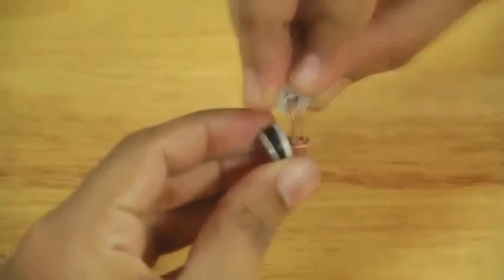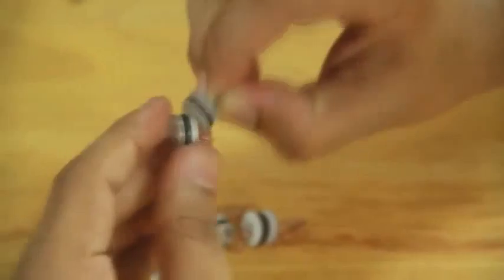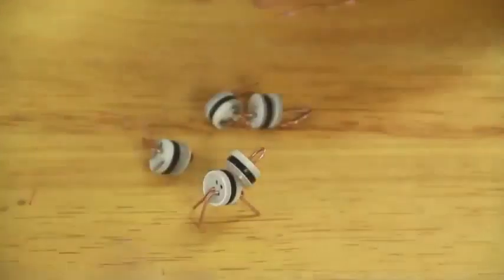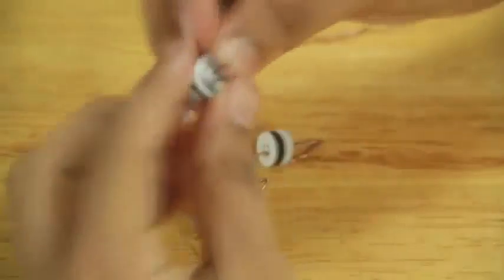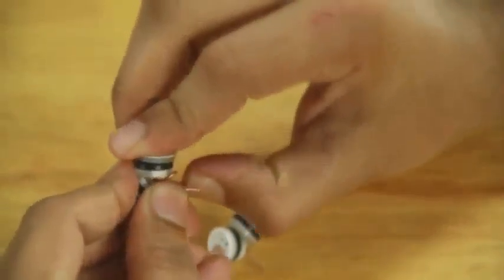Bend the ends of each strip downwards and hook it to each other to form a train. This makes the body of the caterpillar. Once done, press the hook sideways to make it stay in place. Set it aside.